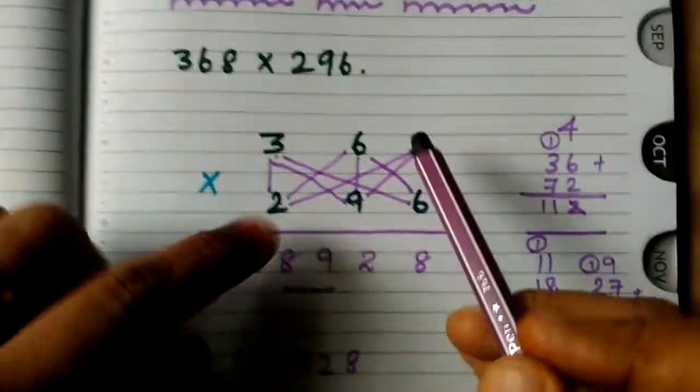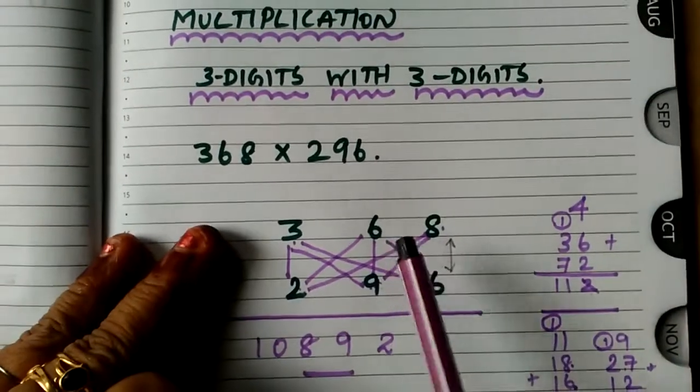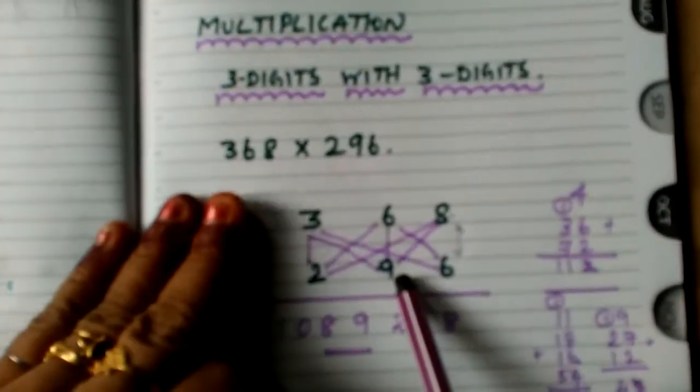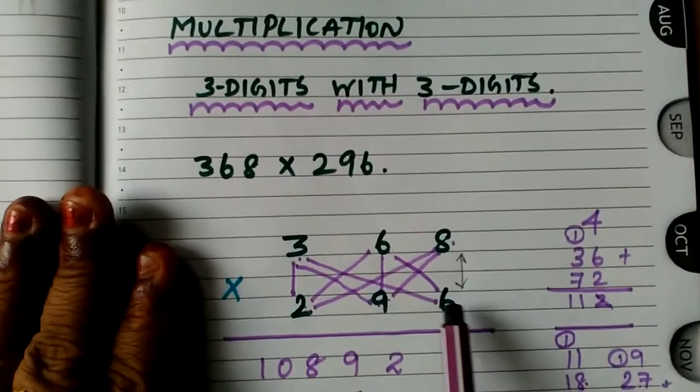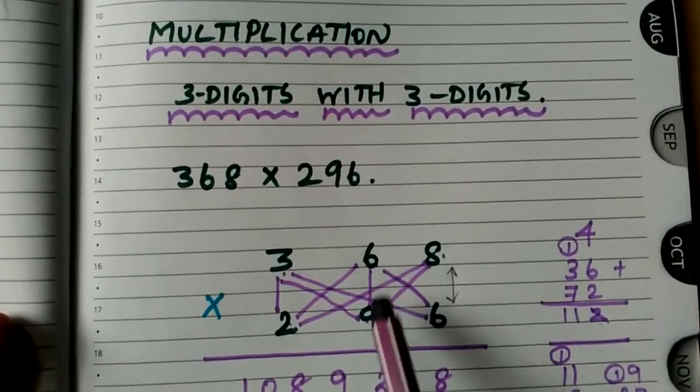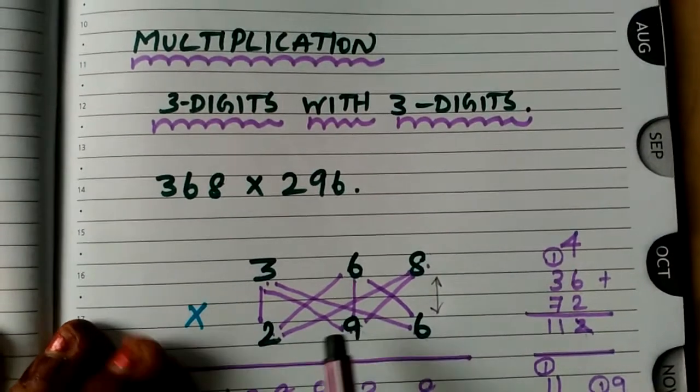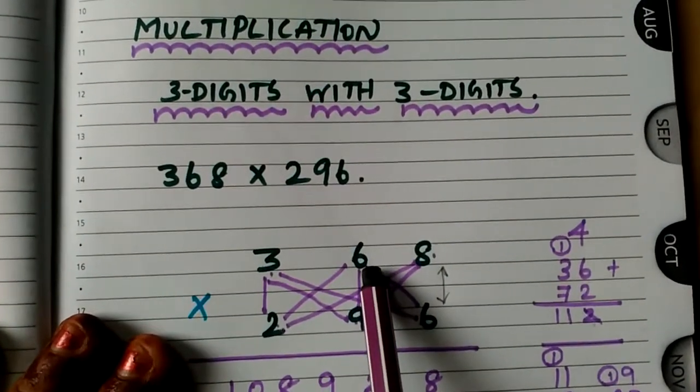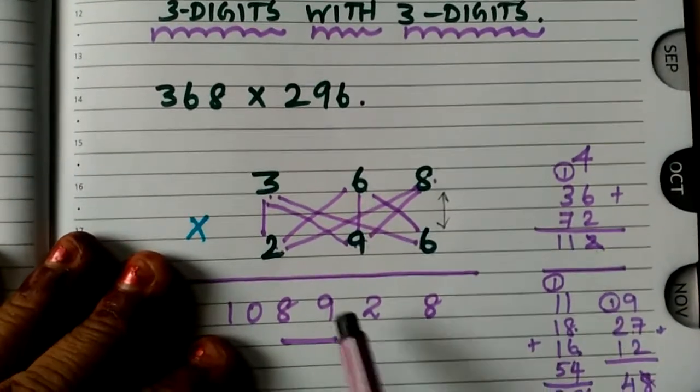So let us see the procedure once again. First: 8 times 6. Second: 6 times 6. Third: 9 times 8. Fourth: 3 times 6. Fifth: 2 times 8. Sixth: 6 times 9. Seventh: 3 times 9. Eighth: 2 times 6. Ninth: 3 times 2. That is all children. Very easy.